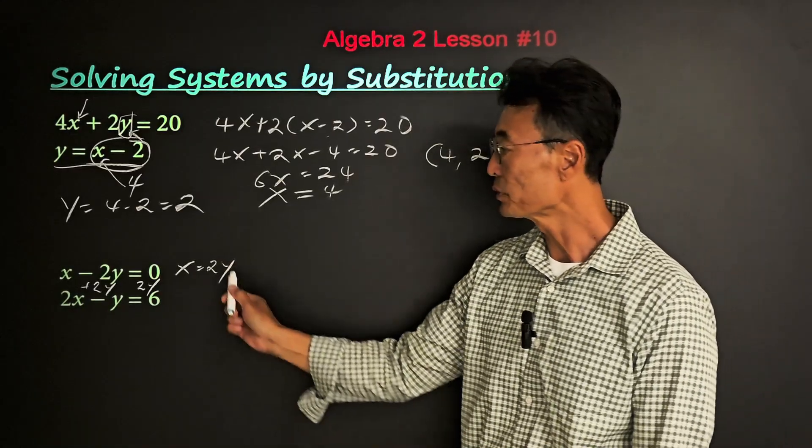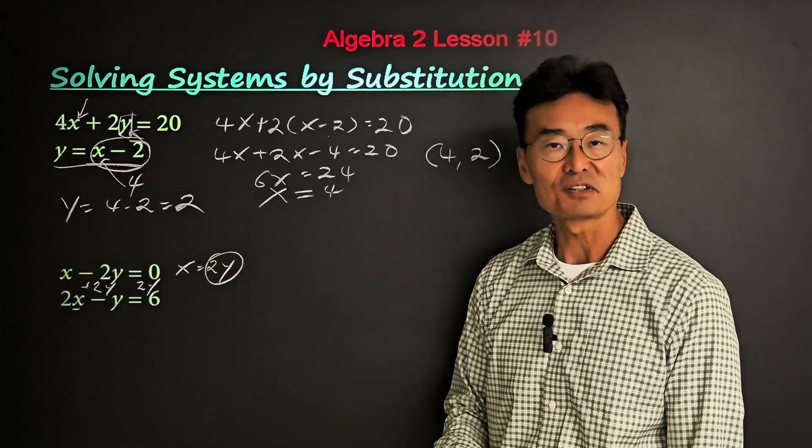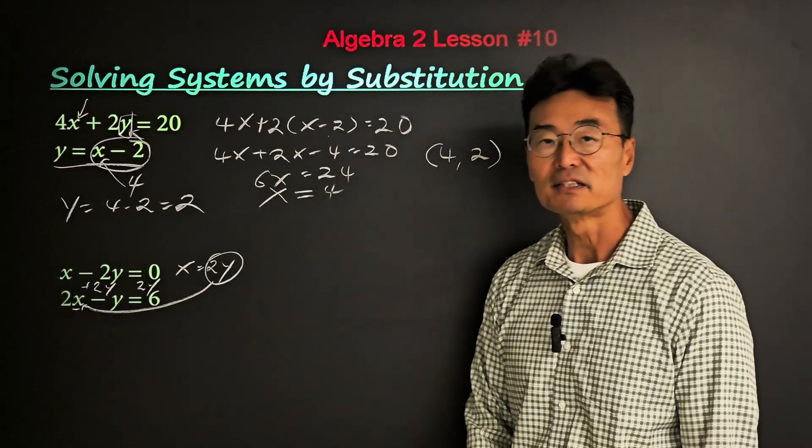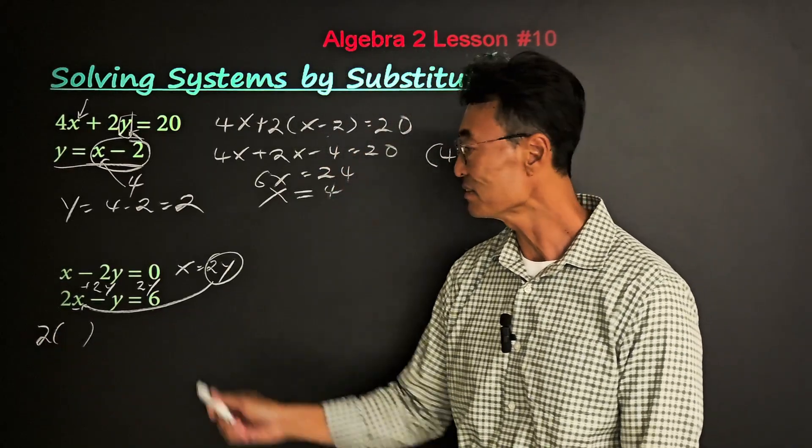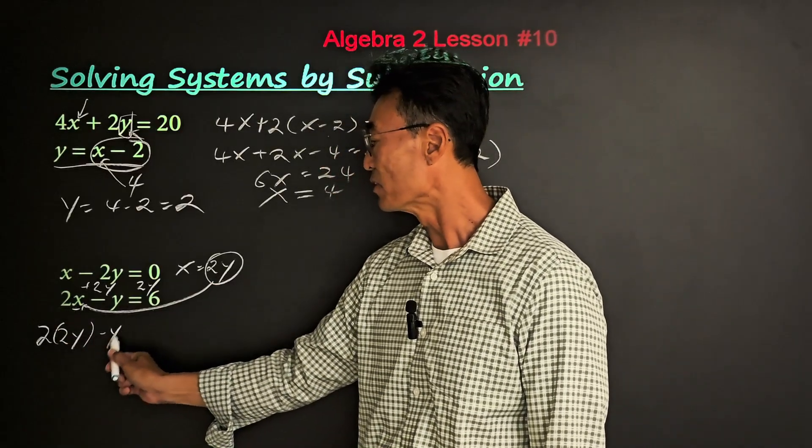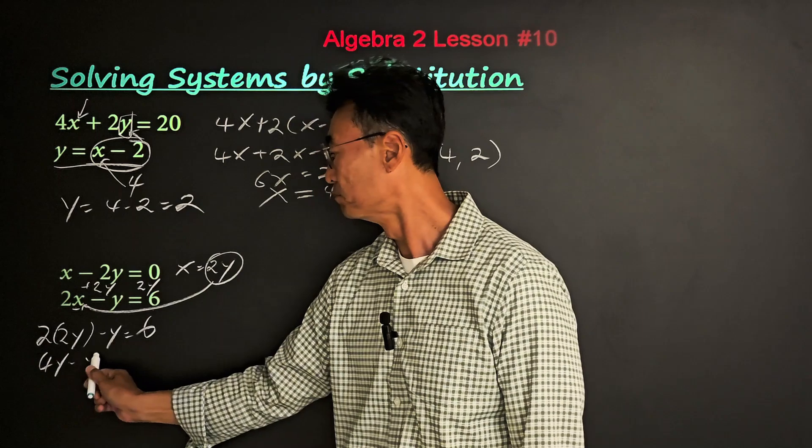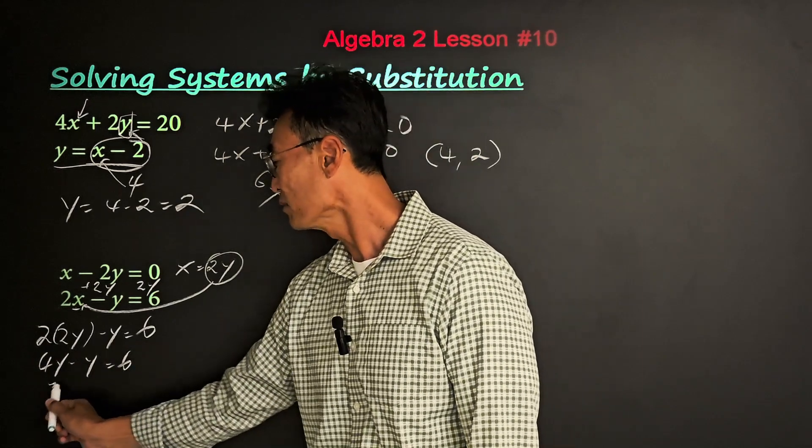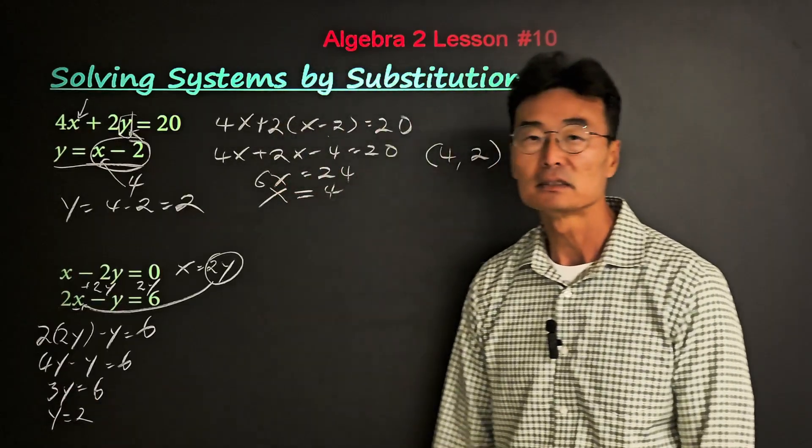Now that we know what x equals, we could take that 2y and substitute for that x. So we'll take that 2y, plug it in right there. We end up getting 2 times, open parentheses, 2y, which equals x, and then the rest of the equation. 2 times 2y is 4y. 4y minus y is 3y. Therefore, y equals 2.